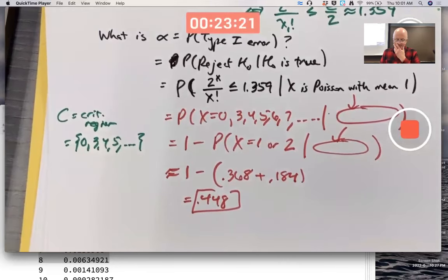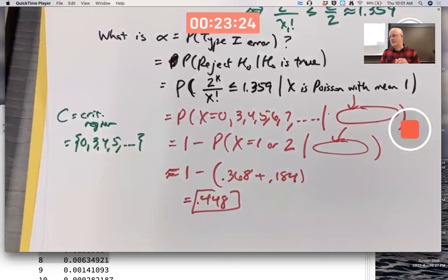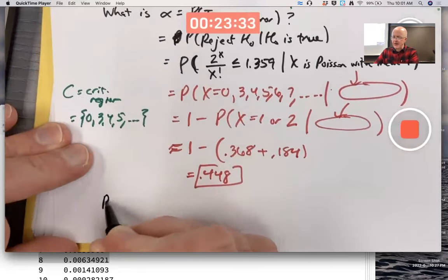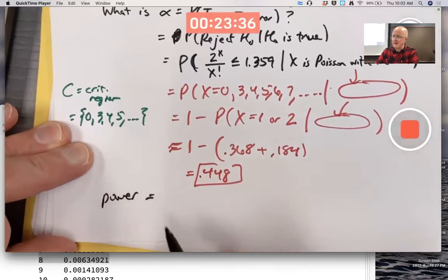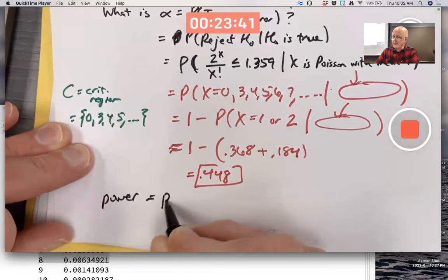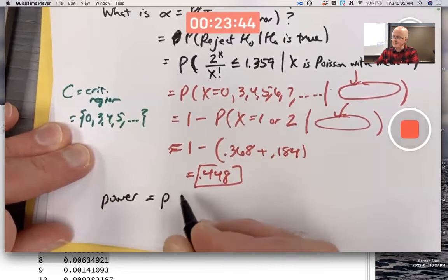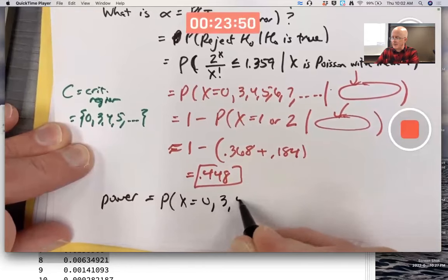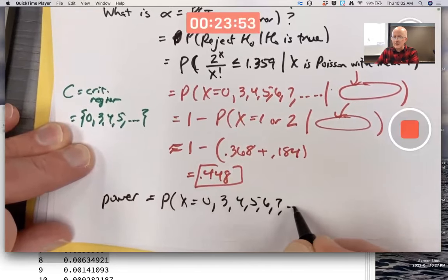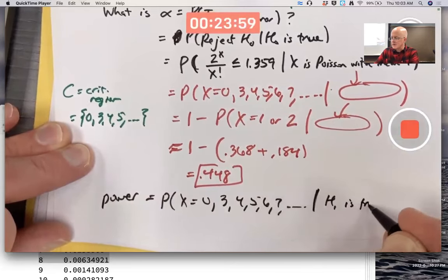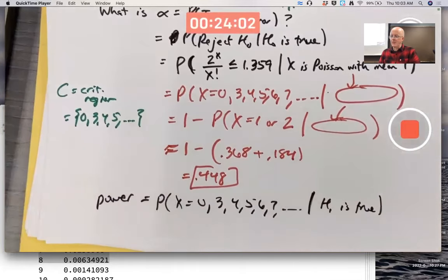What's the power of this test? And as always, what's the probability of a type 2 error? They're related. You know, the power is 1 minus beta, where beta is the probability of a type 2 error. Let's just compute it as the power. What's the power of the test? That would be maximized for this given alpha for this test. It would be the probability that you are in the critical region. Given that the alternative is true. X is 0, 3, 4, 5, 6, 7. Given that H1 is true.